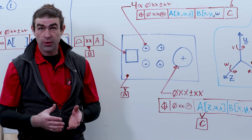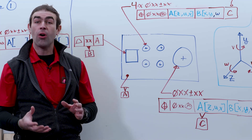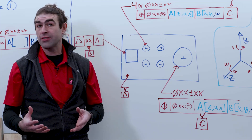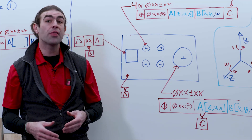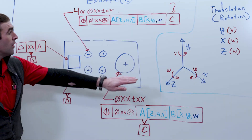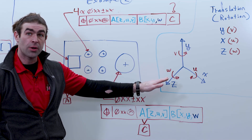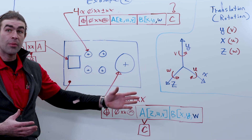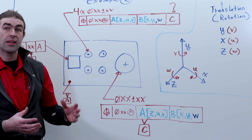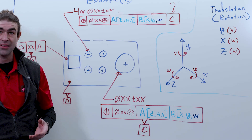What are degrees of freedom? We can think of them as all the ways things can move in space. There are six degrees of freedom — three in translation and three in rotation. If we look at a Cartesian coordinate system, an object can move up, down, left and right, and it can rotate about all of those axes.